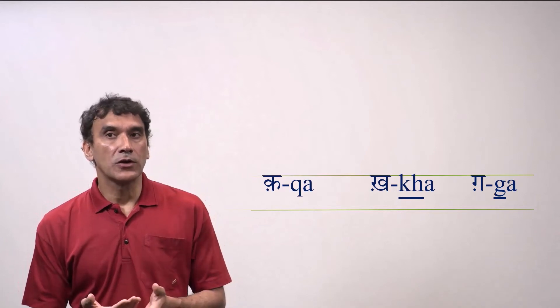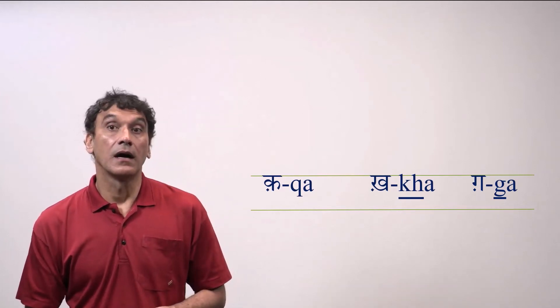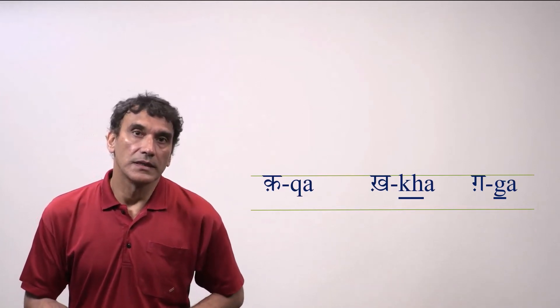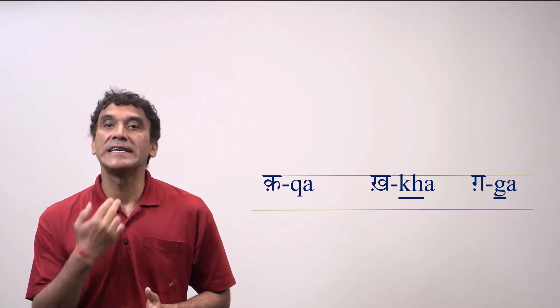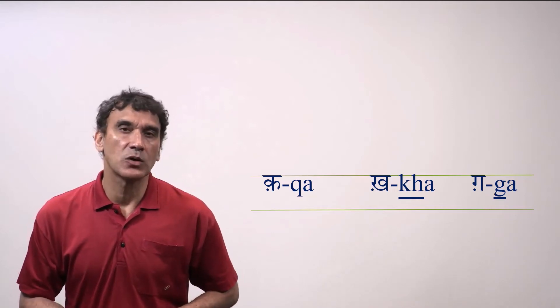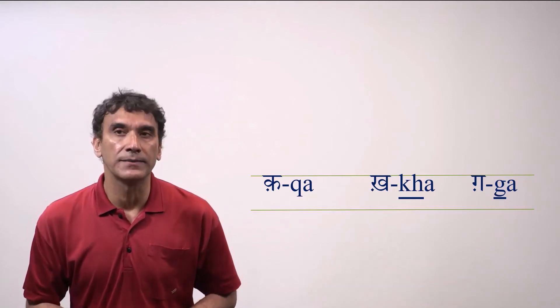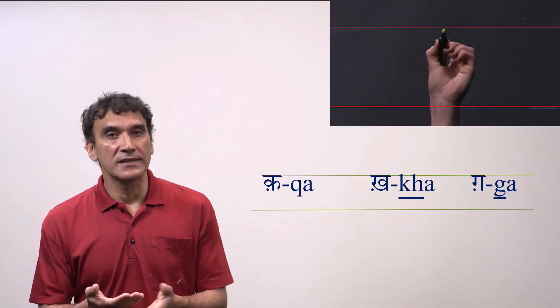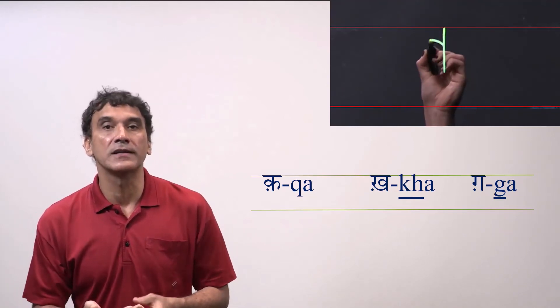The last set of the dotted consonants are Q, Kh, G. These are guttural sounds produced deep inside the throat. Hindi speakers extremely rarely pronounce these sounds and equally rarely write them. They do not make the distinction between them and the velar sounds.